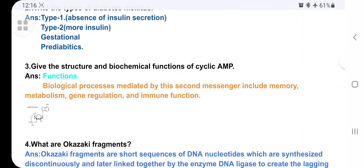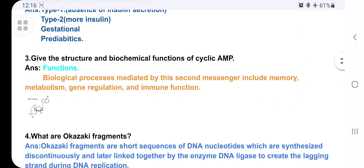Next: give the structure and biochemical function of cyclic AMP. Biological processes mediated by this secondary messenger include memory, metabolism, gene regulation, and immune system function. Go through the structure and write it down.